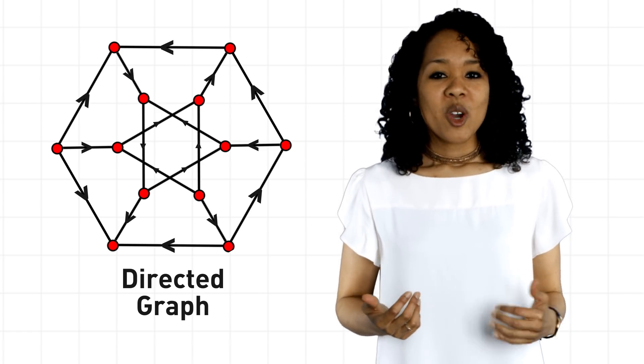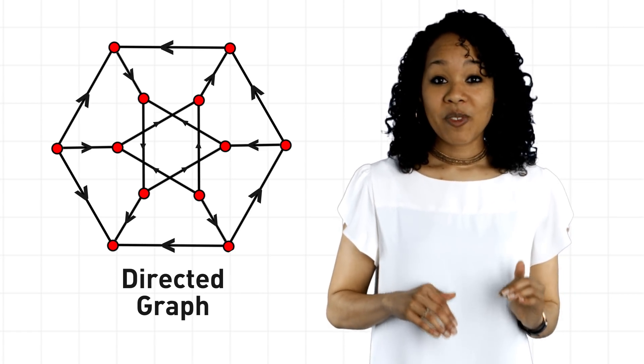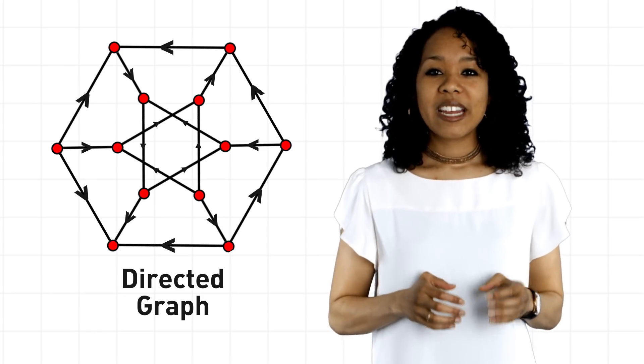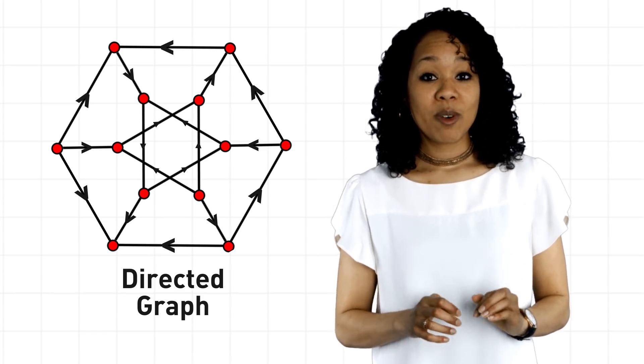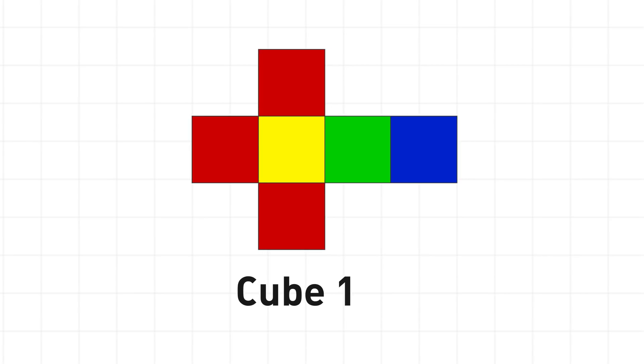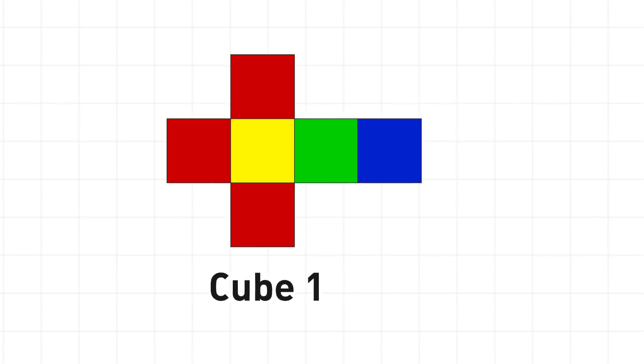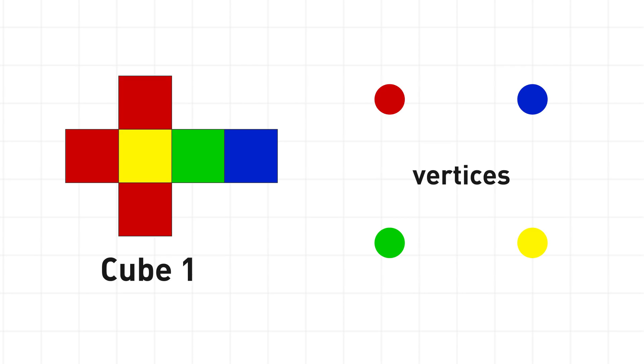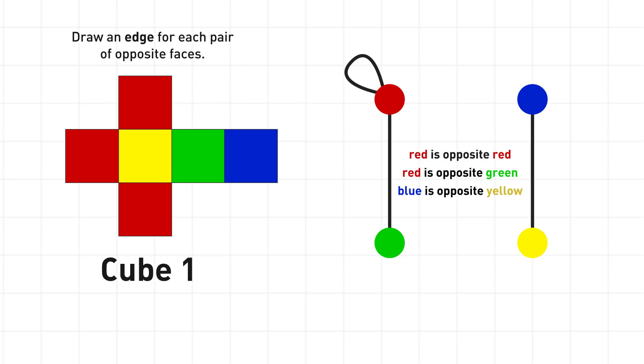How so? We can drastically simplify the puzzle by encoding the information of each cube with a graph. For example, here's the first cube. To represent it with a graph, let's draw one vertex for each color and draw an edge between two vertices if those colors are opposite faces on the cube.